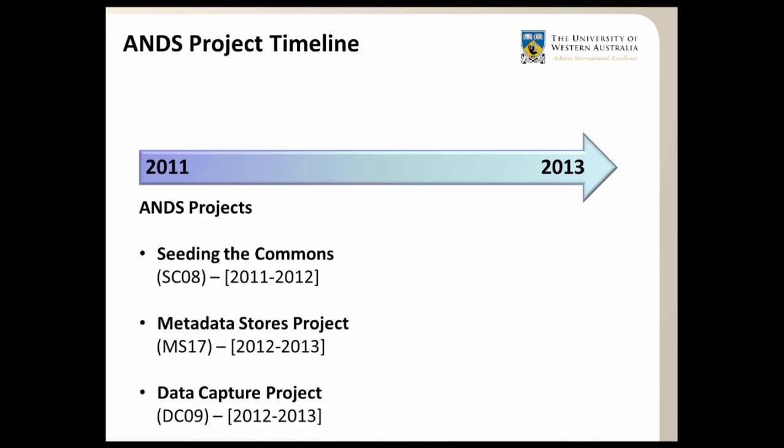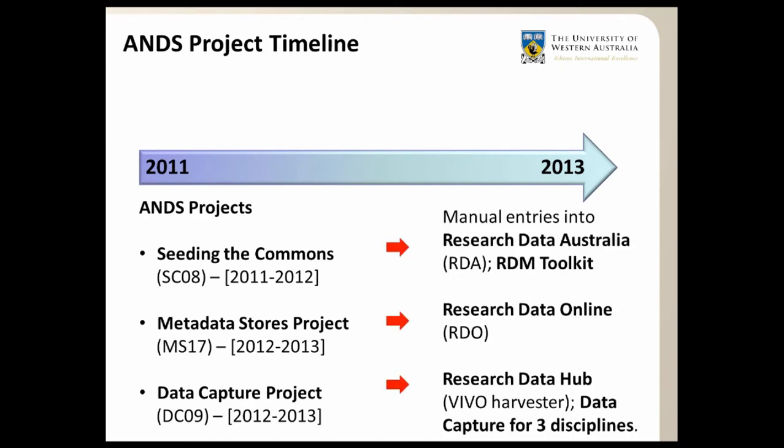The next step was the ANDS projects. UWA received ANDS funding for three projects: Seeding the Commons, the Data Commons Metadata Stores project, and the Data Capture project. These projects resulted in data management systems and training materials as listed.